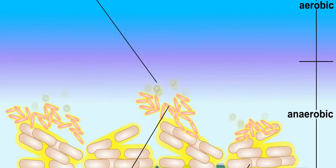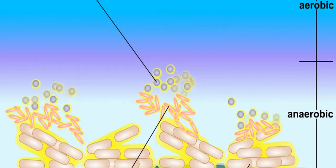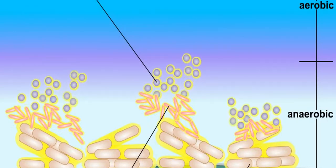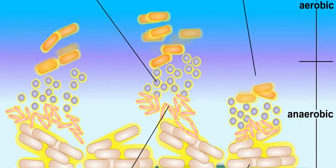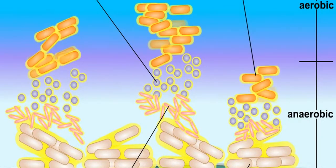Carbohydrates are converted to organic acids and methane by anaerobic bacteria, and the methane can then be degraded by aerobic microorganisms.